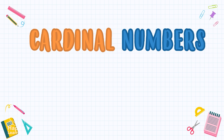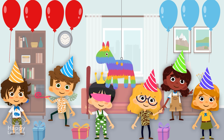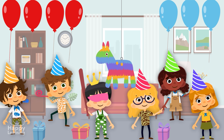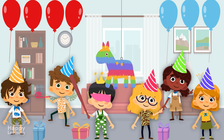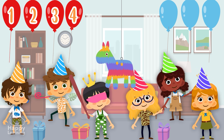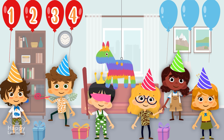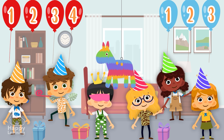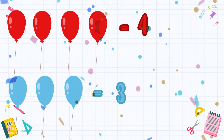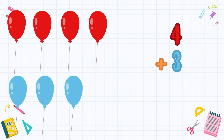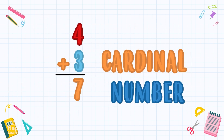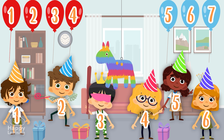With cardinal numbers we can also do mathematical operations — we can add, subtract, multiply, and divide. Let's try it! Let's add up the balloons to see if there are enough for all of them. We have one, two, three, four red balloons and one, two, three blue balloons. If we add four plus three, the total amount is seven — seven balloons in total.